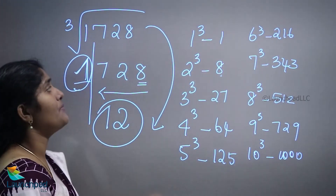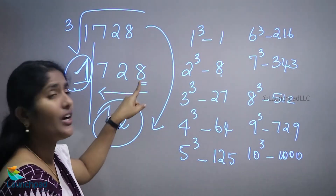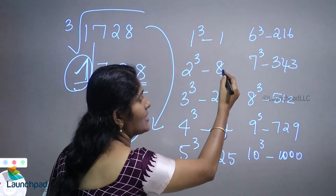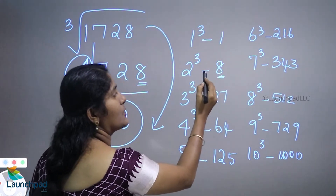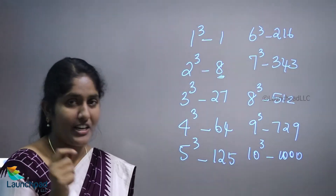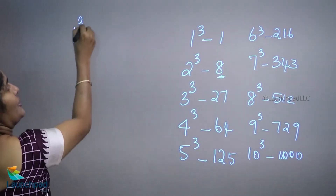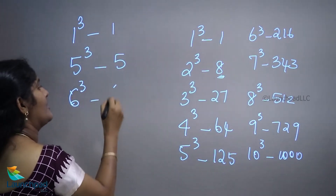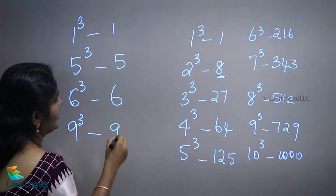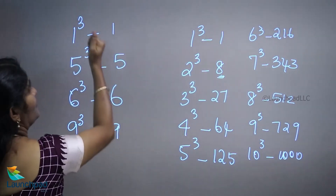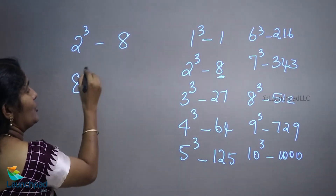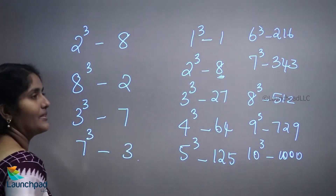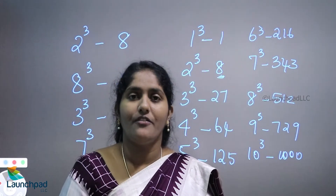To summarize the steps: split the number into groups of 3 digits from the right, then check the unit digit. Cube root has an interesting tip: 1 cubed always ends with 1, 2 cubed ends with 8, 8 cubed ends with 2, 3 cubed ends with 7, and 7 cubed ends with 3. This is the shortcut for finding the cube root.